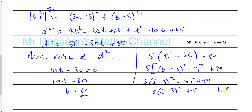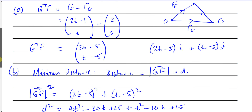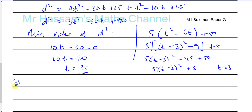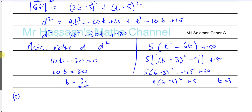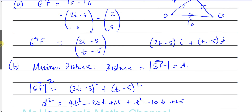So when t equals 3 you get the minimum, and the value of D squared at that minimum is 5. This actually gives you the answer to part c as well. Part c says: find the minimum distance between the two dogs.